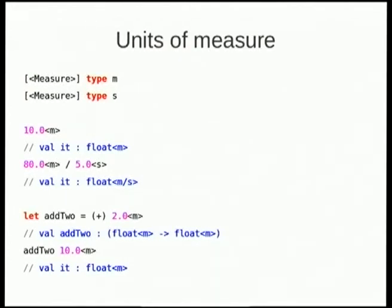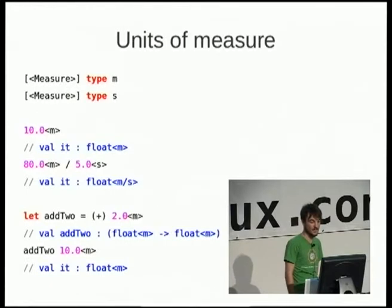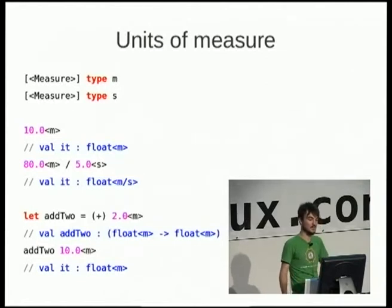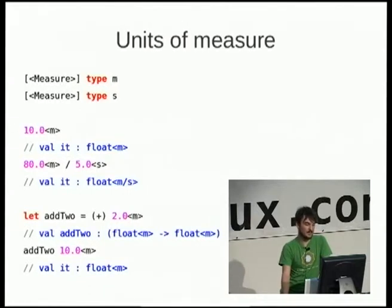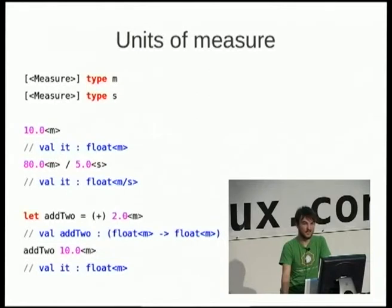Units of measure are pretty cool and pretty unique to F-sharp — I haven't really seen this in many other languages. You can annotate something as a measure and use that in your program. We've got a float of M — saying we've got 10 meters — and 80 meters divided by 5 seconds creates a new type of float meters-per-second. You can make functions that take those measurements, and it's type safe: you can't add one second to one meter because that just doesn't make sense. It's all defined by types.